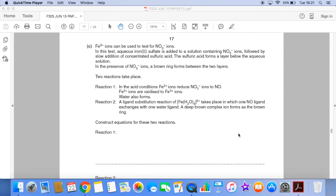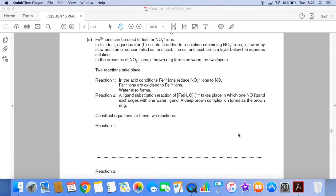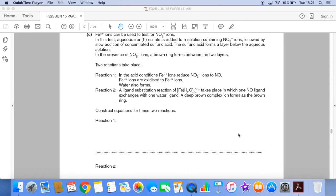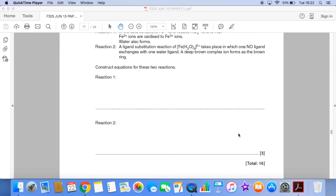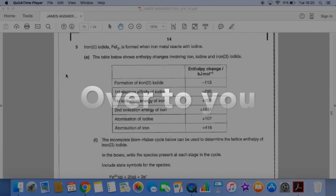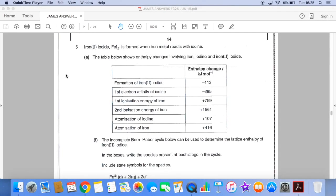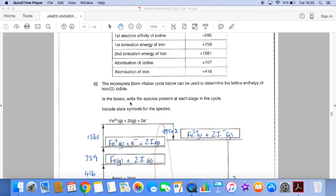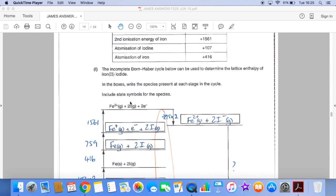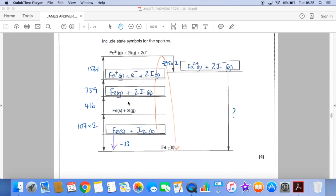And the final part of the question, part C, we're told we're given a lot of information to process, we're told about two reactions that take place, we're given some observations and we have to construct two equations for the two reactions. So the first part of the question, we're going to use the information in here to complete the boxes, complete the cycle, and we have to write the species present at each stage in the cycle with state symbols. So if you can just ignore the numbers and this arrow, I'm going to talk about that in the calculation in a moment.